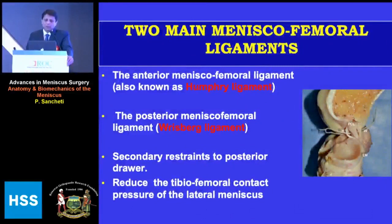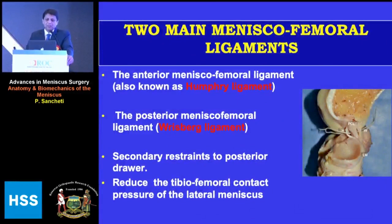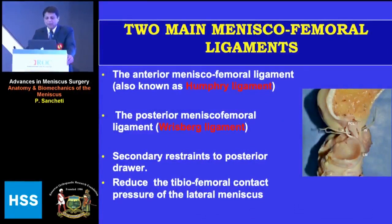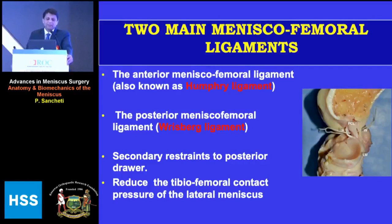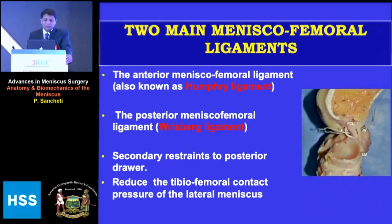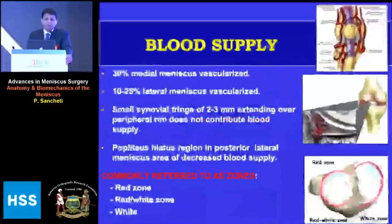Two more important ligaments are the meniscofemoral ligaments just behind the PCL — the Humphrey's ligament, the anterior meniscofemoral ligament, and the posterior meniscofemoral ligament, also called the Risberg ligament. These are secondary restraints to the posterior drawer and one must keep them in mind, especially when doing PCL reconstructions.